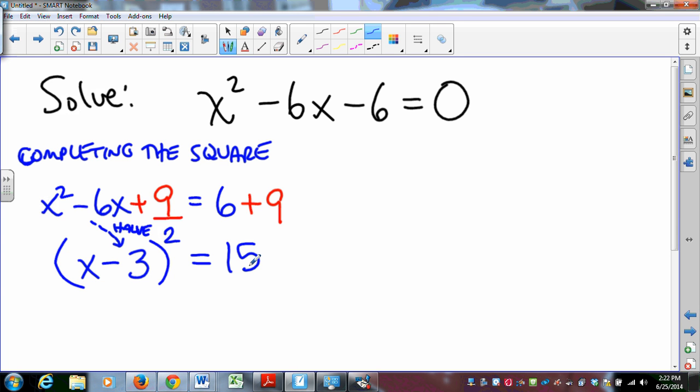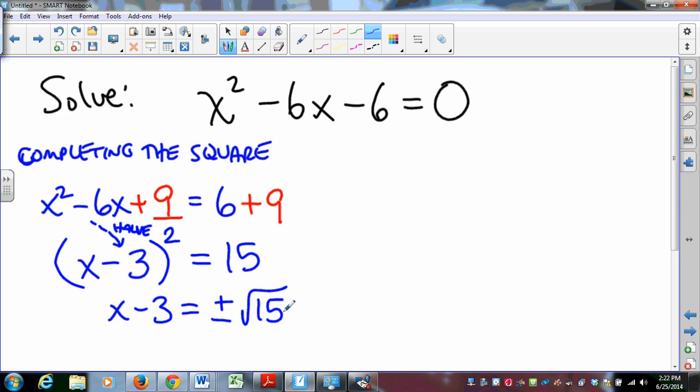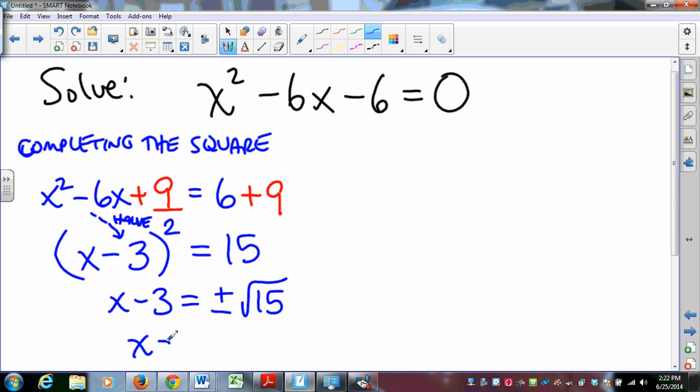6 plus 9 is 15. And now it just remains to solve an equation in complete square form. How do we get rid of this squared? We take a square root. We take both the positive and the negative square roots. And then what happens? We kick the 3 over to the right side, and we get 3 ± √15.